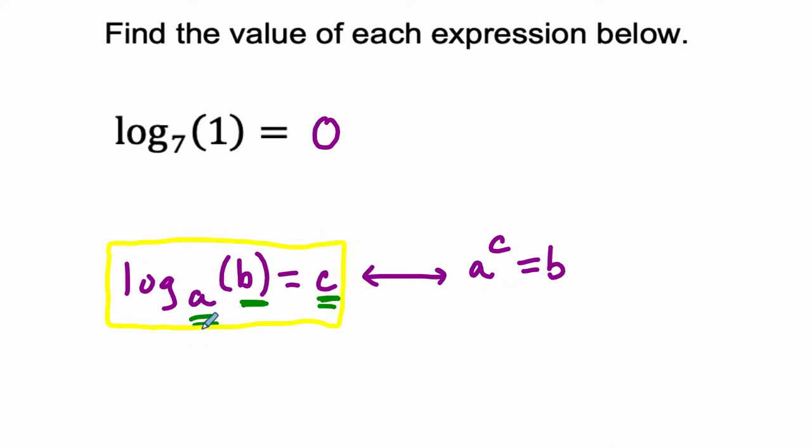That little number, that's our base. And then of b, that's essentially our result. And c is the exponent that we're looking for.